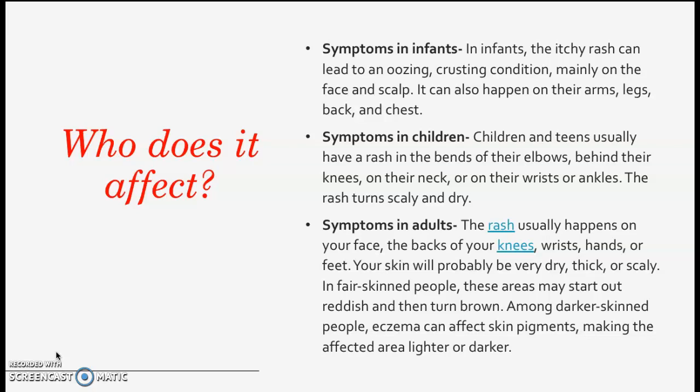The rash can also be on the wrists or ankles, and it turns scaly and dry. Symptoms in adults: the rash usually happens on the face, the back of the knees, wrists, hands, or feet. Skin will probably be dry, thick, and scaly. In fair-skinned people, the areas may start out reddish and then turn brown. Among darker-skinned people, eczema can affect skin pigmentation, making the affected area lighter or darker.